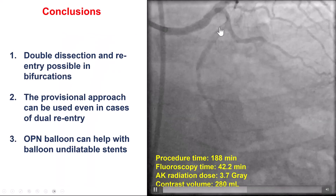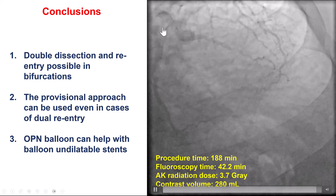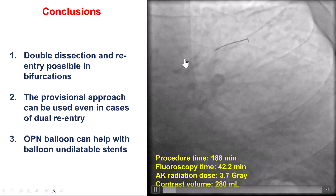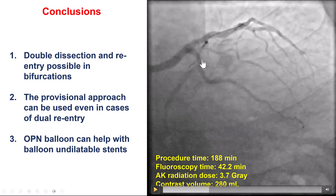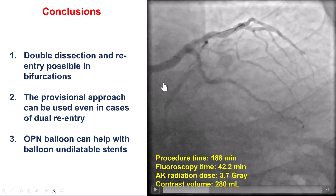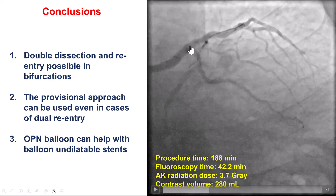In summary, this is an example of dual use of the Stingray to recanalize both branches of a bifurcation at the distal cap. This has been shown in previous videos — one of the last was video 243, where there was actual use of DK crush to recanalize a diagonal-LAD bifurcation on the distal cap. But this case demonstrates that in some cases, the provisional approach can be successful even when we have used dual re-entry. Finally, the OPN balloon at 40 atmospheres was successful in expanding a balloon-undilatable stent. Thank you.